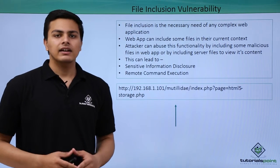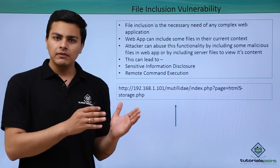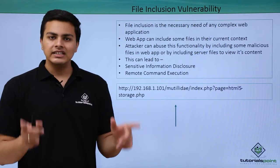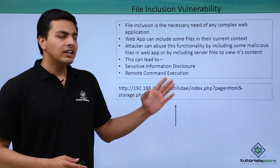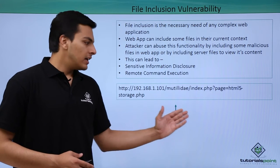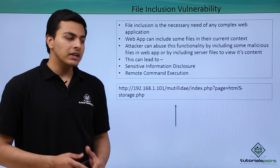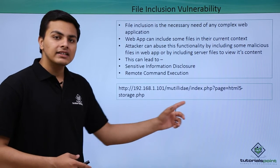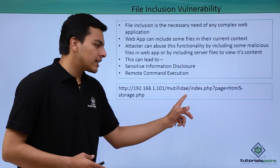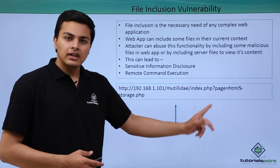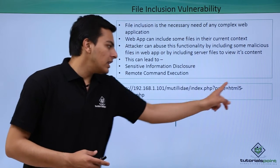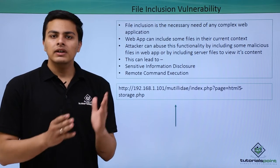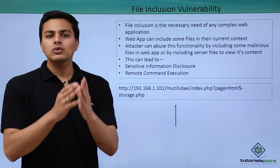As a penetration tester or as an attacker, what we can do is try to include some server files in it. If our web application includes the server files and we are able to see the server file content, it means that web application is file inclusion vulnerable. If we look at this URL, there is one file called index.php which takes one argument called 'page', and here we are giving another file name, html5storage.php, so index.php is including this file in itself. What we can do is remove this file, write down the internal server file path, and see whether the web application includes that server file and whether we are able to see its content.